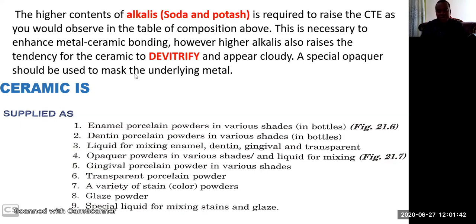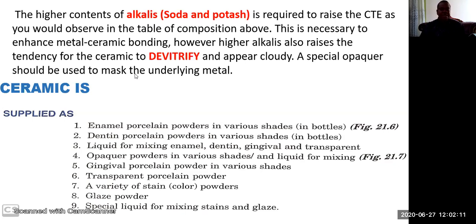Opaque is also a form of ceramic, mixed in different ways and supplied so ceramists can use them differently. Gingival porcelain powder comes in inferior shades to simulate the gingiva. Transparent porcelain powder in various shades is used to stain the appliance. Glaze powder and special liquid for mixing stains and glaze are also forms of ceramic. When you need to glaze, you take the liquid form and smear it on — you might think it's a different material, but it is also ceramic.